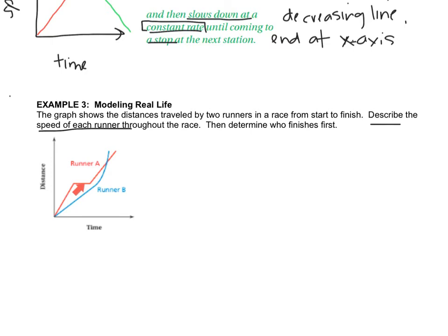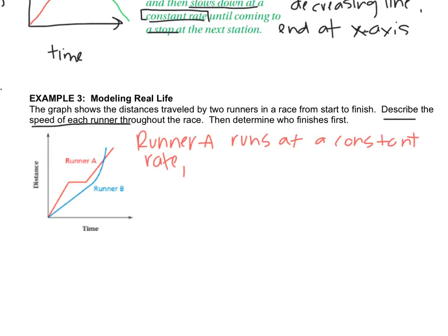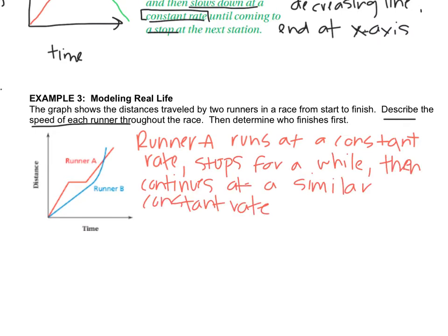After this break is over, Runner A increases at a constant rate as well. So let's write that story for Runner A. I've got Runner A runs at a constant rate, stops for a while, then continues at a similar constant rate. The reason that I said a similar constant rate is because you can see the slopes of this first line and the second line are very similar. So the speed that the runner was going, pretty much the same both times.